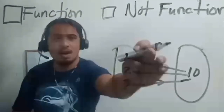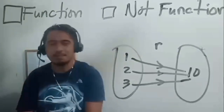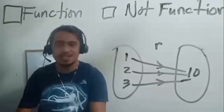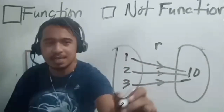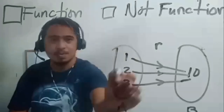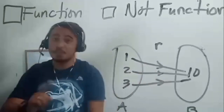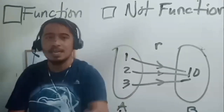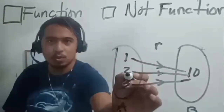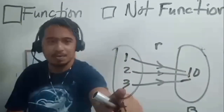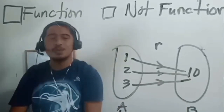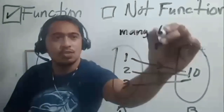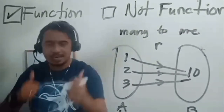How about rule R — is it a function? Condition 1: elements 1, 2, and 3 of the domain are all assigned, so no problem. Condition 2: the assignment of 1 is only 10, the assignment of 2 is 10 only, and the assignment of 3 is 10 only. Each assignment is unique. Therefore, this is a function. Many-to-one is a function.